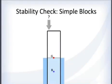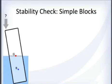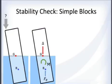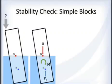Push down on one side of the tall skinny block. It tips over; the center of gravity does not change but the center of buoyancy shifts. Now look at how the moment is oriented — it wants to take that block and continue rotating it.